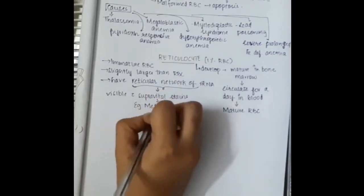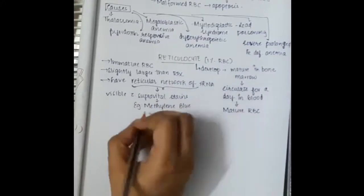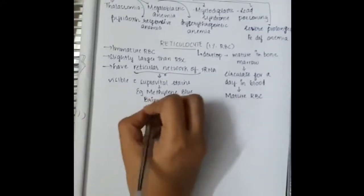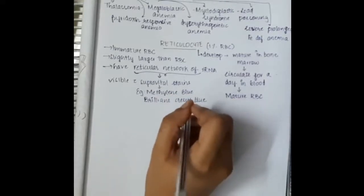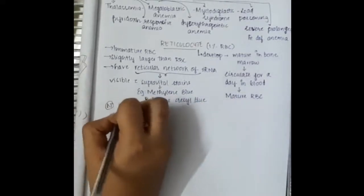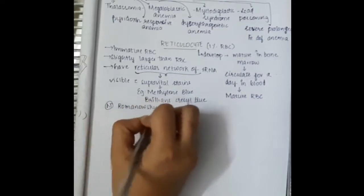For example, it is visible with methylene blue or brilliant cresyl blue.